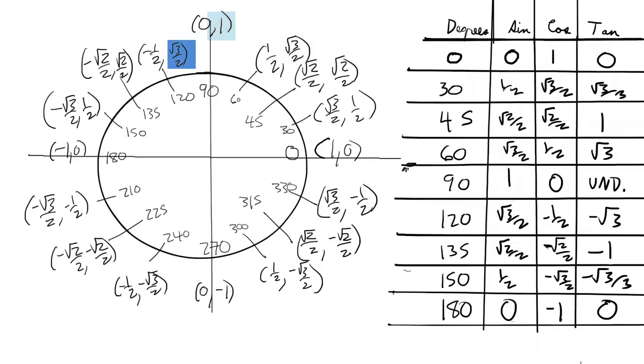The sine of 120 degrees is √3 over 2. The sine of 135 degrees is √2 over 2. The sine of 150 degrees is 1/2. The sine of 180 degrees is 0.